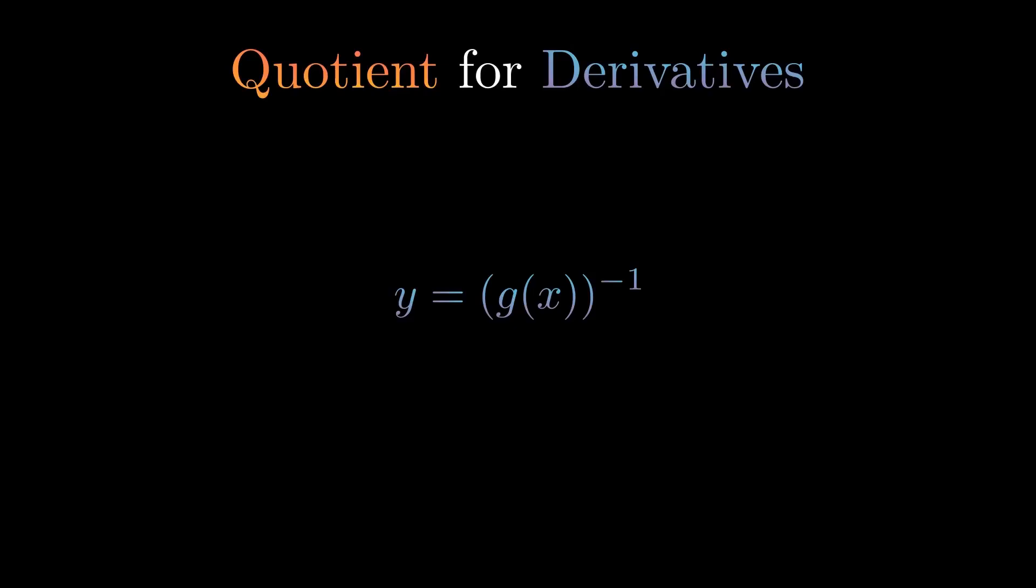Using the chain rule, we get the following equation. Simplifying a bit, we get the derivative of 1 over g(x).